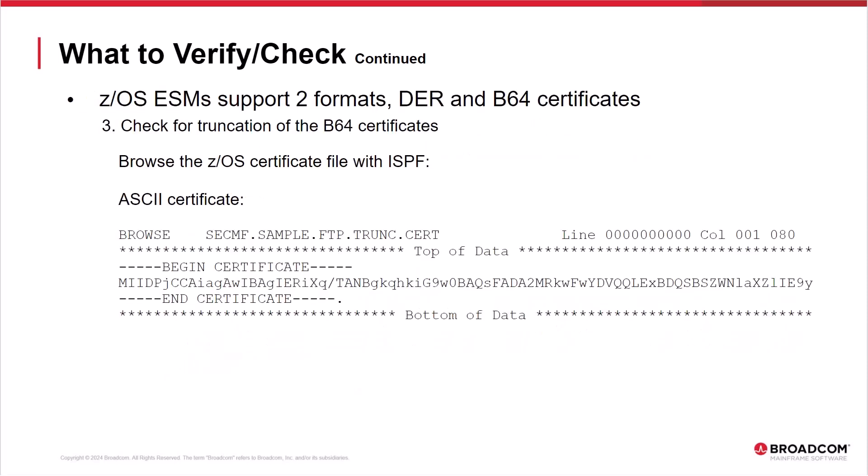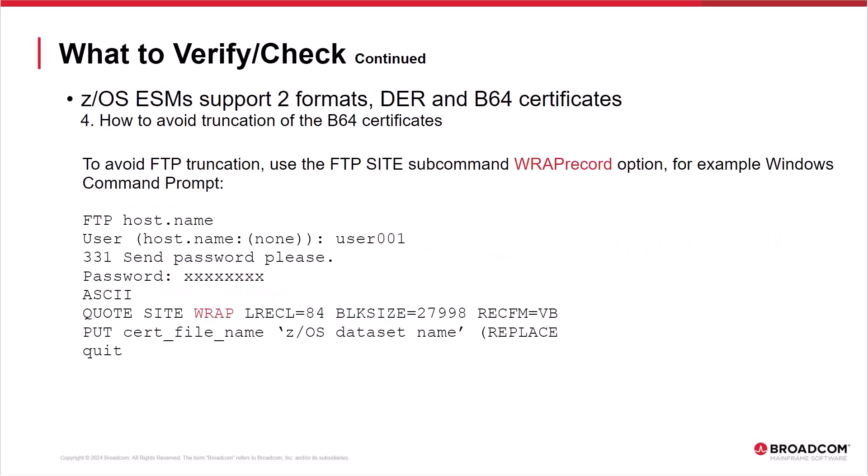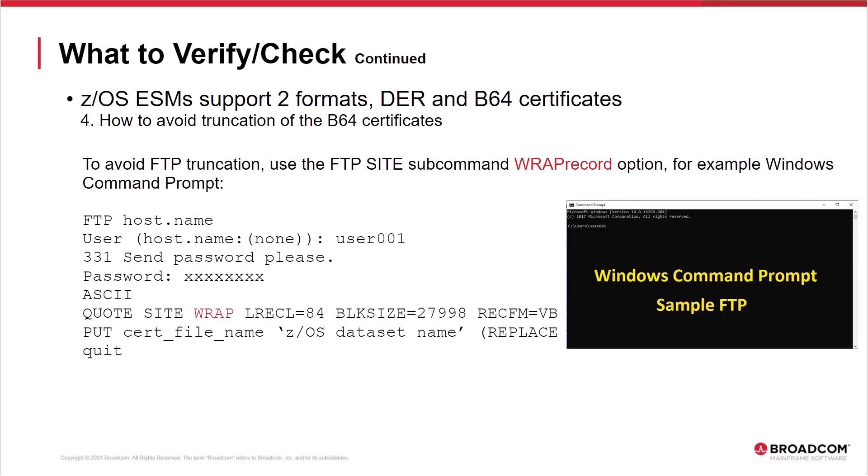The next situation to check is certificate truncation. B64 ASCII format certificates can be subject to truncation problems when FTPing from Windows to z/OS. To determine if a certificate was truncated, browse the certificate file with ISPF Browse. If the certificate only contains three lines — with BEGIN CERTIFICATE and END CERTIFICATE on the first and last lines, and the second line containing characters through column 80 — this would indicate that the certificate was truncated. To avoid B64 ASCII certificate truncation, the certificate should be FTP'd with the SITE subcommand WRAP RECORD option.